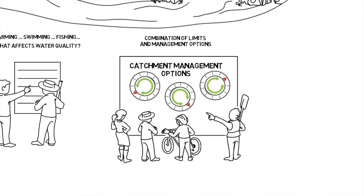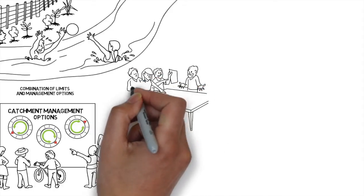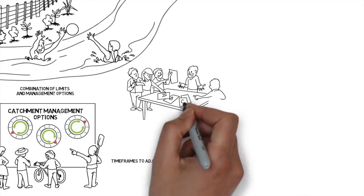You'll also be able to set timeframes to adjust to the new rules and practices that work for the community so existing businesses can adapt. If the cost is high, you might want to rethink your objectives or think about how taking a longer time could get you there.